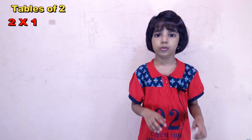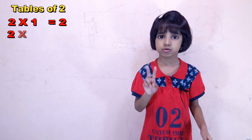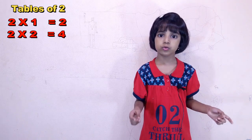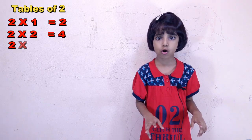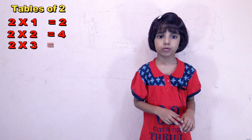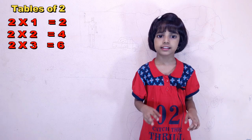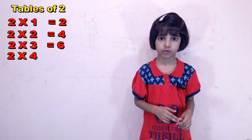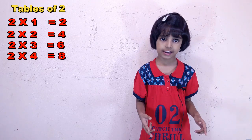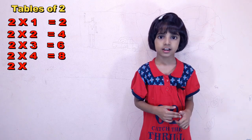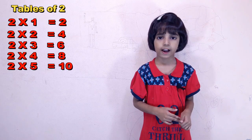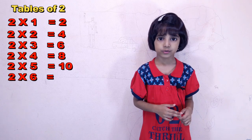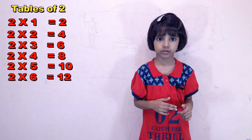Two ones are two. Two twos are four. Two threes are six. Two fours are eight. Two fives are ten. Two sixes are twelve.